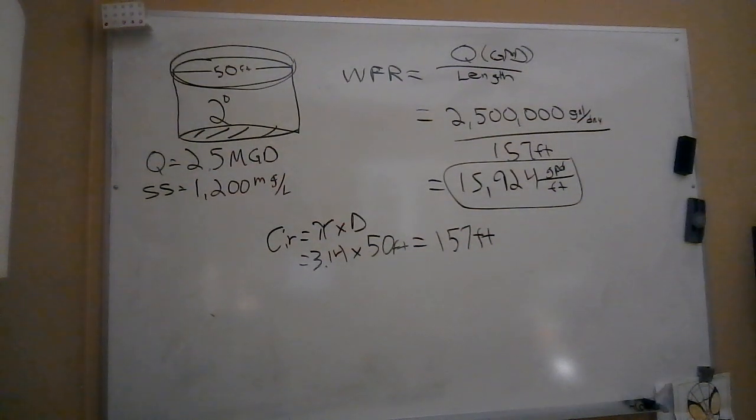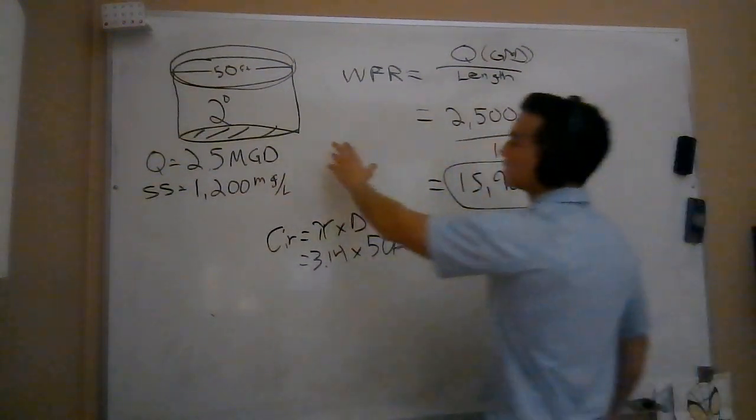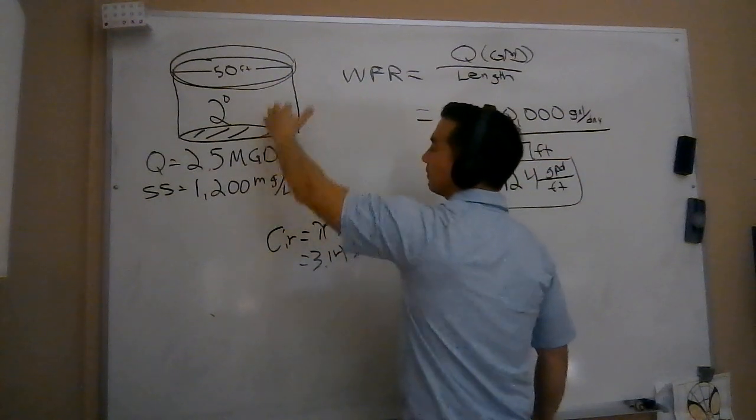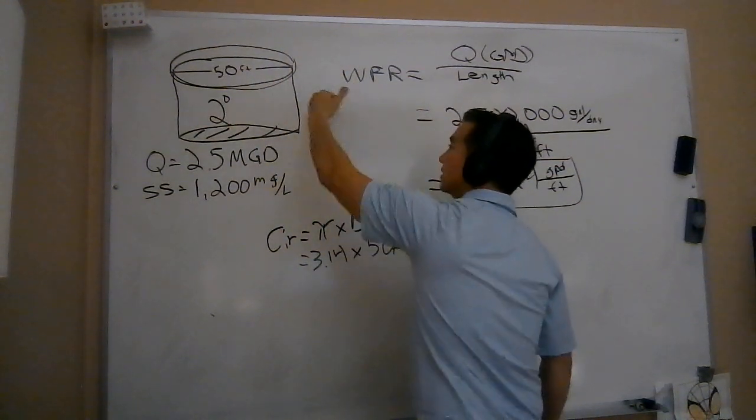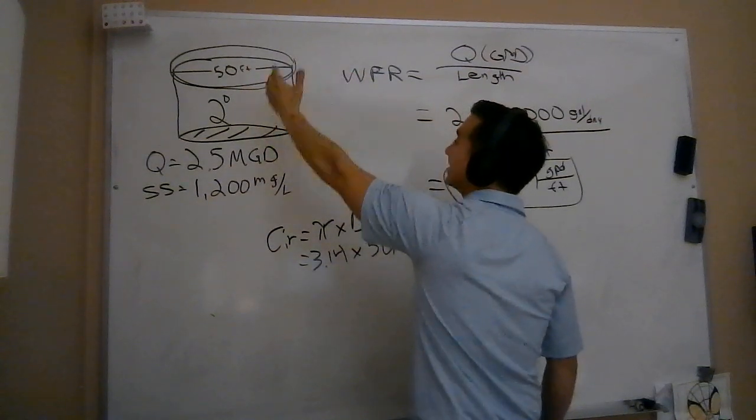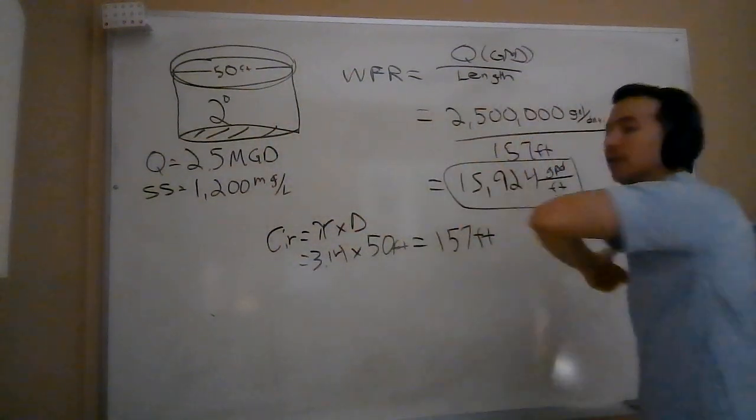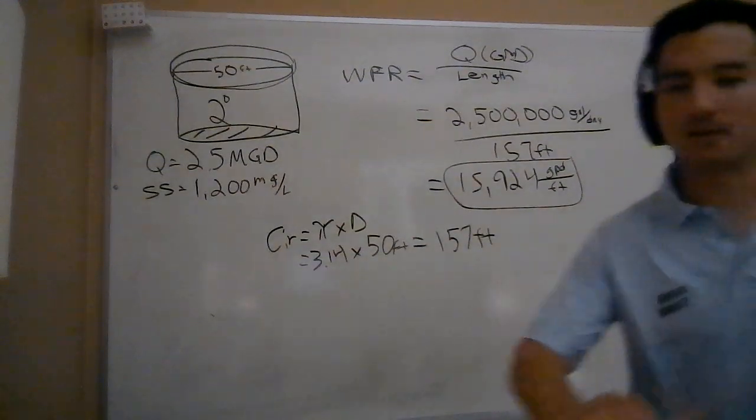So again, we're talking about a secondary clarifier. We started by calculating the solids loading rate as those solids settle out. We finish with our weir overflow rate - that is the clean, clear water that's leaving secondary and heading over to tertiary. All right.